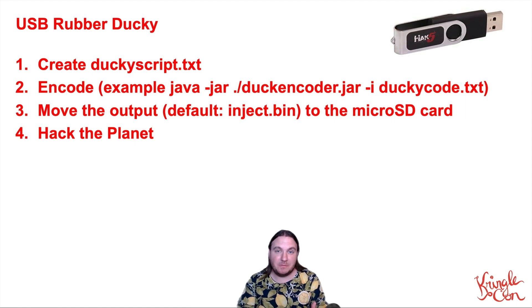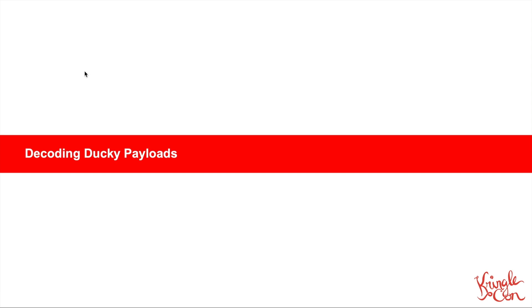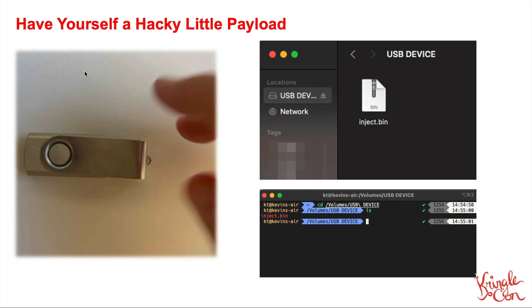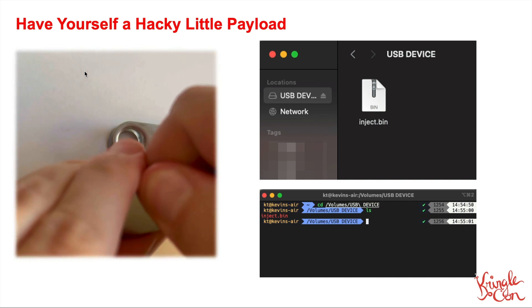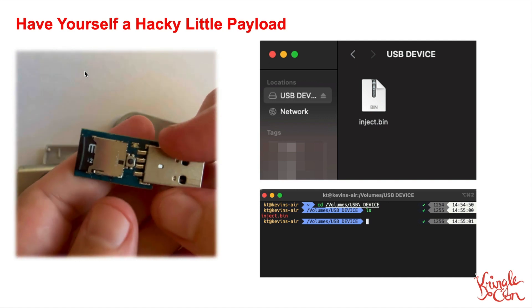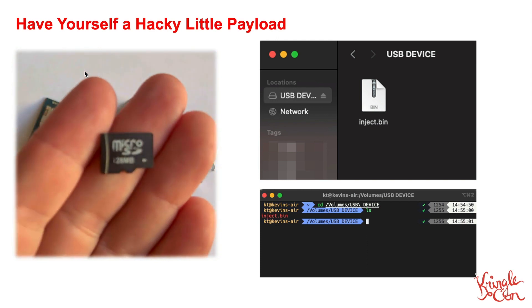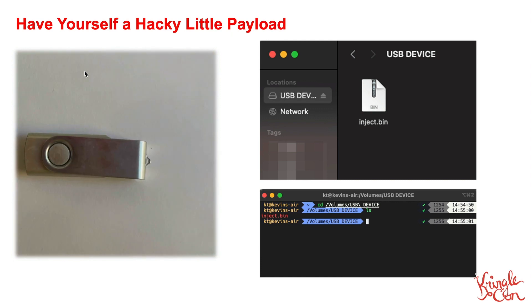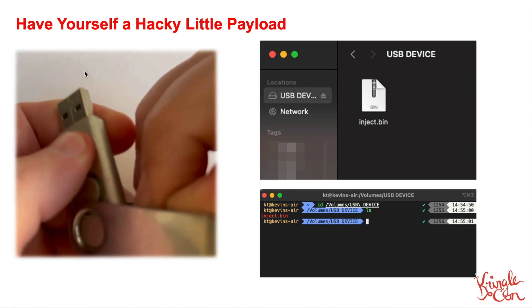So if you found a USB rubber ducky device — maybe the help desk turns it in, or you find a suspicious-looking thumb drive on the ground — you open it and you see a micro SD card. For the last part of the talk I'll kill the camera so we can focus on screen. You can see the little video on the left showing how to get at that micro SD card. You pop off the case, crack it open, and in there you'll see a little micro SD card. You pull that out — mine is actually starting to get worn out, I've pulled it in and out so much — and then you plug it into a micro SD card reader. I plugged it into my Mac and it just popped up in Finder.